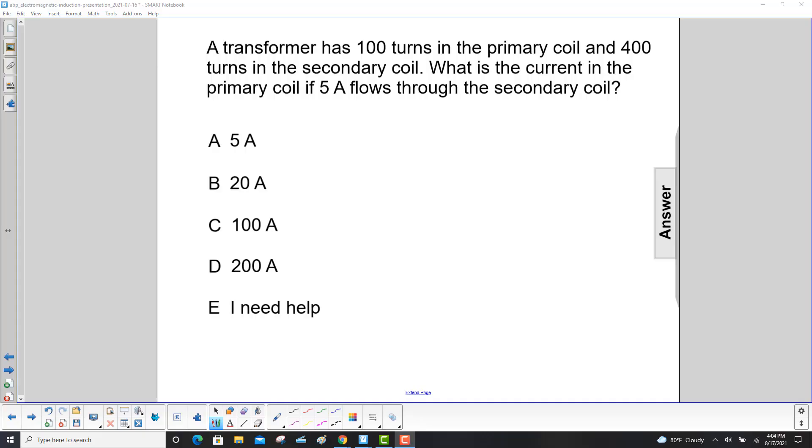A transformer has 100 turns in the primary coil and 400 turns in the secondary coil. What is the current in the primary coil if 5 amps flows through the secondary coil?